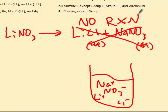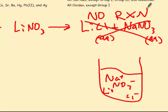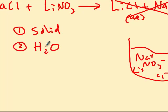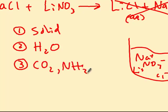So here are the conditions for having a reaction. Number one: if we form an insoluble solid known as a precipitate, a reaction will occur and we'd have to balance it. Number two: if you produce a pure liquid like water — if water is produced on the right-hand side, you do have a reaction.